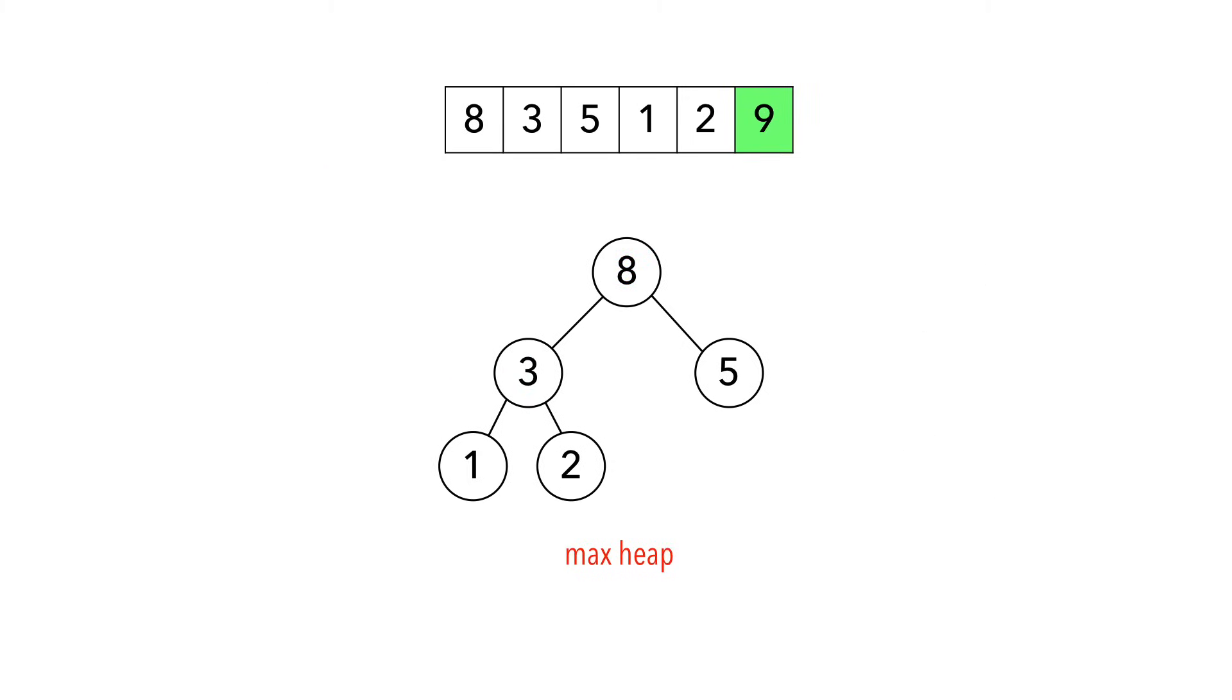We're back to having a max heap. Let's swap the largest number 8 with the item at the end of the unsorted part of the array, 2. We remove 8 and consider it sorted.